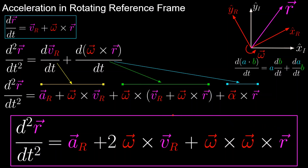So this equation states that the second derivative of position as seen in the rotating frame is equal to the acceleration as seen in the rotating frame, plus Coriolis, plus centrifugal, to account for the fact that the frame is rotating. It's important to note when each term is equal to zero. The Coriolis acceleration would be zero if the object has no velocity with respect to the rotating frame, or if that velocity were parallel to the angular velocity vector. The centrifugal acceleration would be zero if the position of the object were zero — meaning it's at the center of the rotating frame — or if the position is parallel to the axis of rotation, omega.